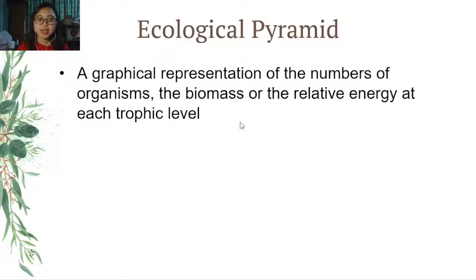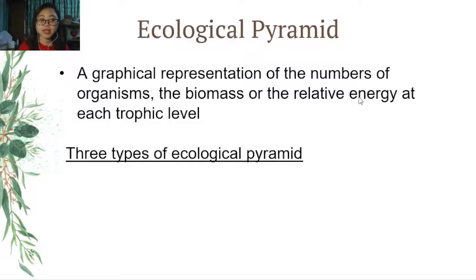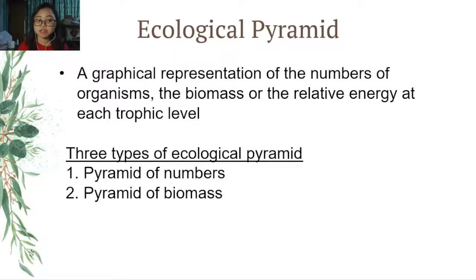Now let's move on to ecological pyramids. From the data gathered — whether it is the number of individuals at each trophic level or the amount of energy — we can arrange that into a pyramid shape. An ecological pyramid is a graphical representation of the numbers of organisms, the biomass, or the relative energy at each trophic level. There are three types of ecological pyramids: pyramid of numbers, pyramid of biomass, and pyramid of energy.